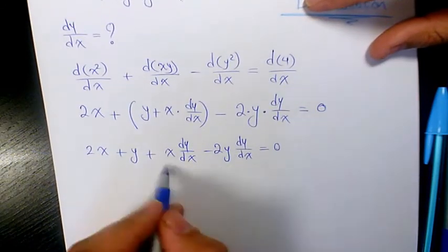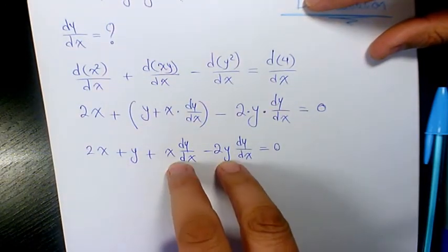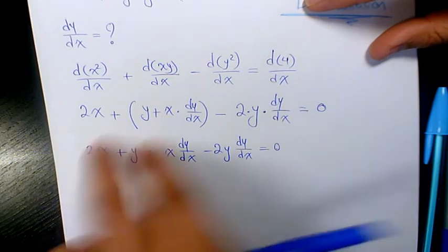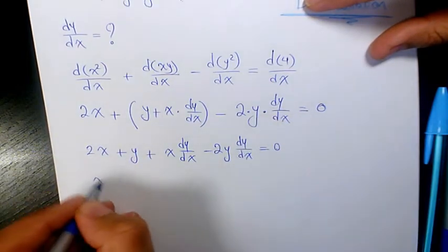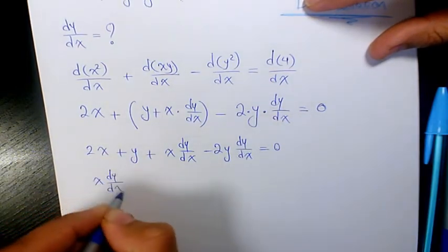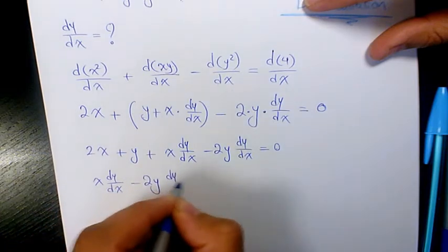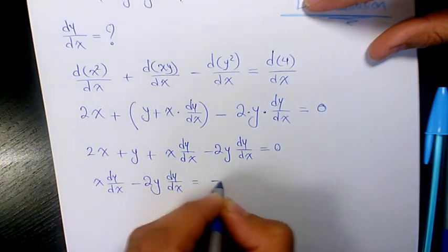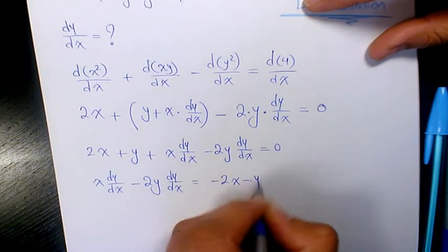Keep these two terms here and move these two terms to the right-hand side, so it's x·(dy/dx) - 2y·(dy/dx) = -2x - y.